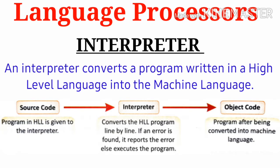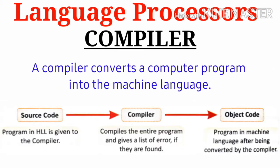Interpreter: An interpreter converts a program from high-level language into machine language. A compiler also converts a computer program into machine language.